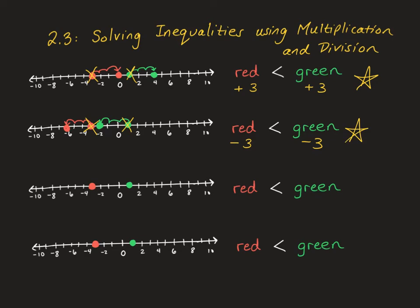On the third number line, we're going to multiply by 3 this time. The red dot was at negative 3, and negative 3 times 3 is negative 9, so it becomes negative 9. And the green dot was at 1, and 1 times 3 is 3, so it goes to positive 3. Red became much lower on the number line, and green went a little bit higher, so it is definitely still true — red is still less than green.